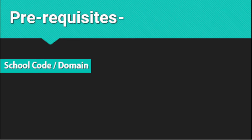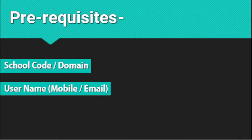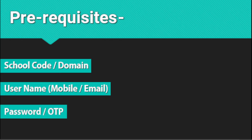Now let us know the prerequisites of creating an account. The first one: we need to have the school code or the domain. The second information we need is the username, which is either the mobile number given by you or email. In this case, we will only use the mobile number and then the OTP.